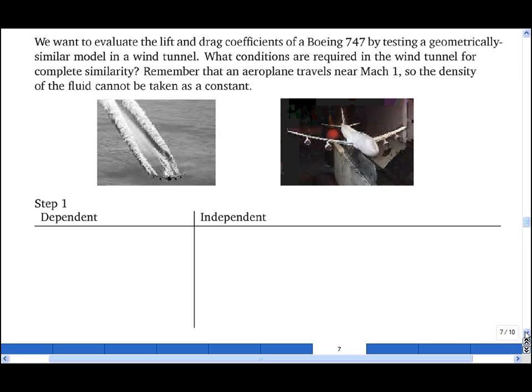Step one: write down the dependent variables. These are the drag and the lift. For the independent variables, we have the properties of the air - the density far away from the airplane and the viscosity. D is a characteristic length scale of the airplane. V is the speed of the air around the airplane. α is the angle of attack. Because the airplane is flying close to the speed of sound, we also need to include a, which is the speed of sound, a dimensional measure of the compressibility of the fluid.